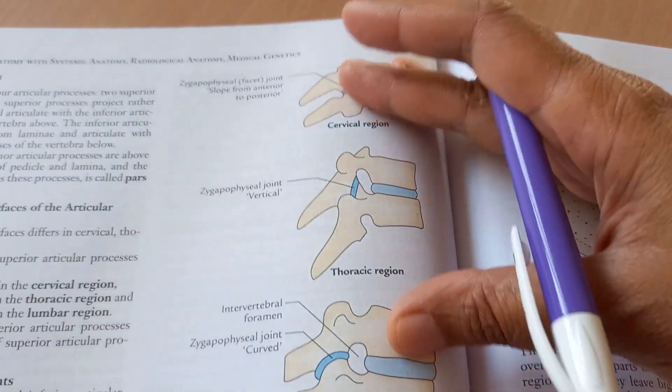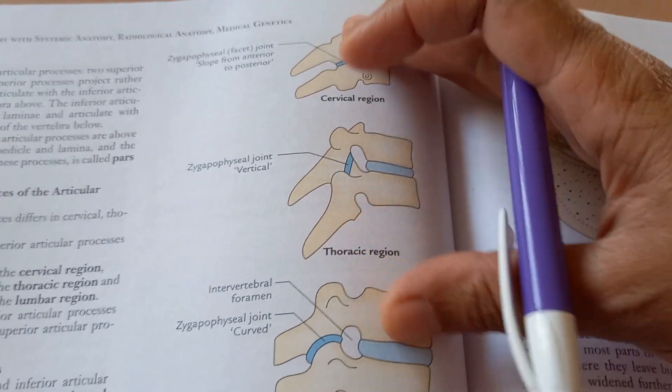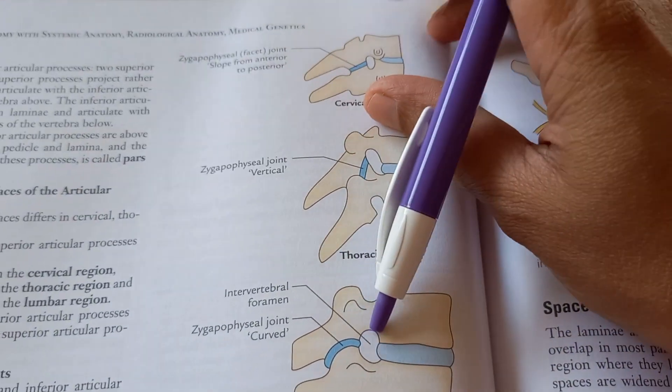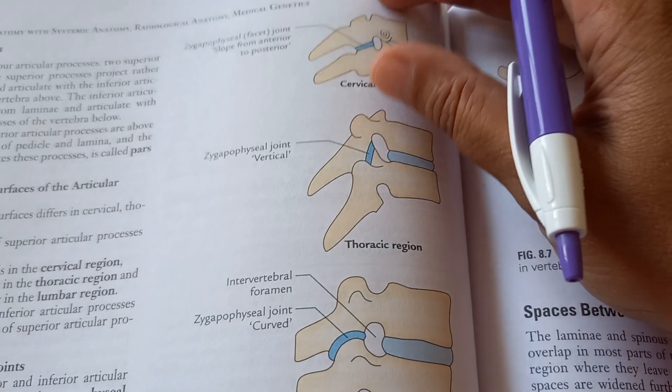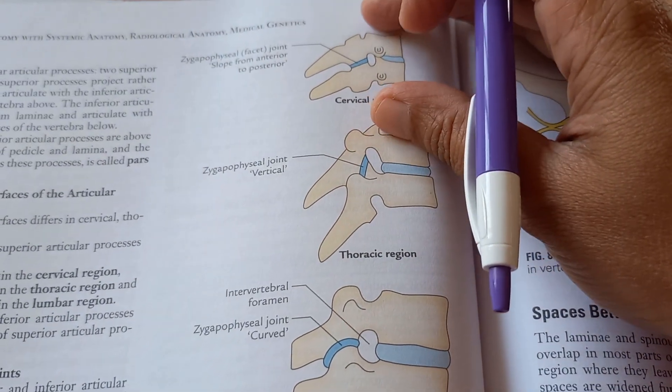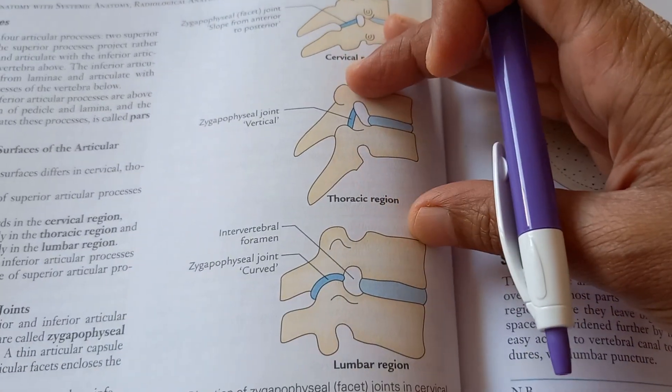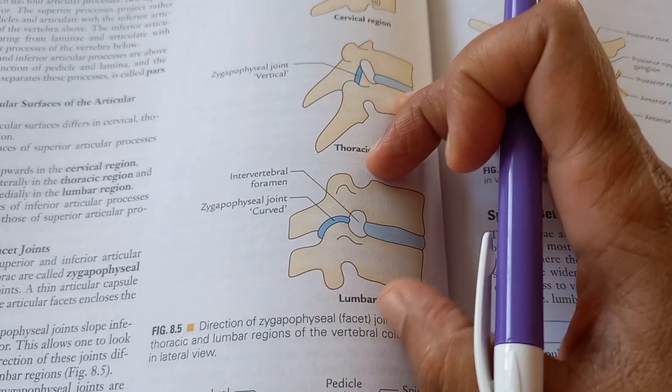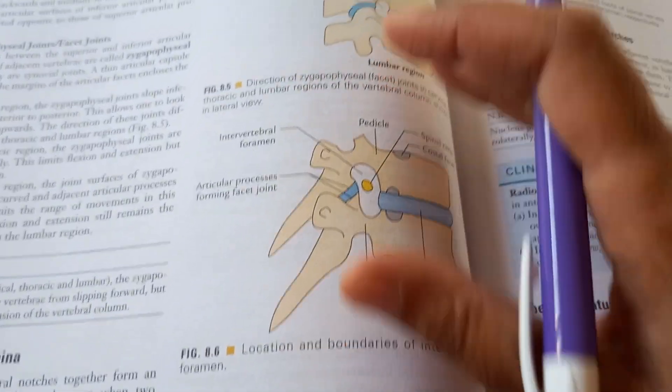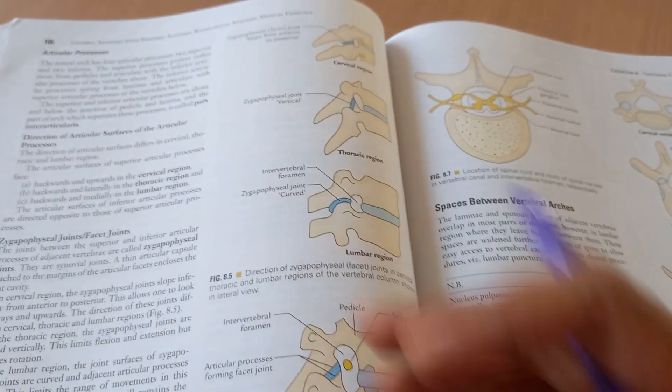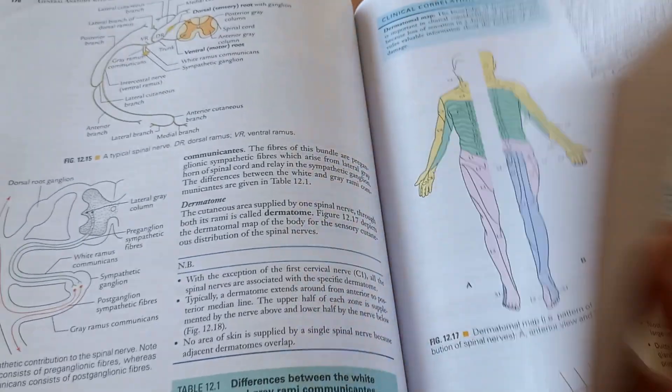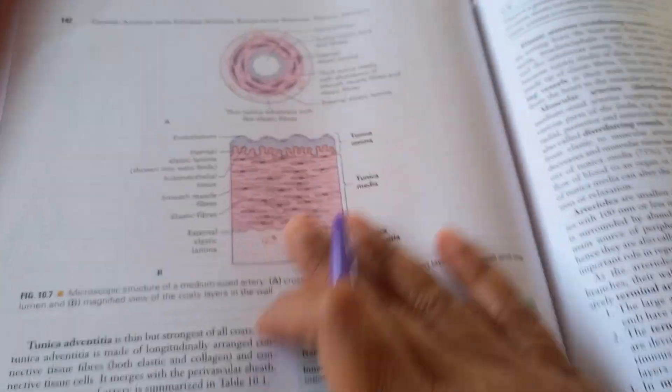So here the vertebral column itself, they are giving a separate chapter. You should know the different vertebra. Look, this is the cervical region, how the vertebra will be. Then the thoracic region, how it will be. The lumbar region, how the vertebra will be. So you should know what the difference is. If they give you the vertebra in your hand, you should be able to identify it.